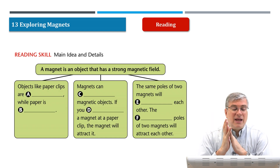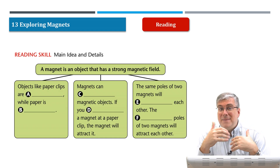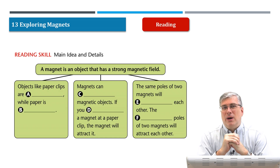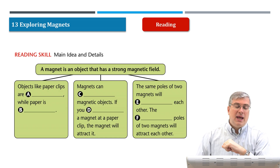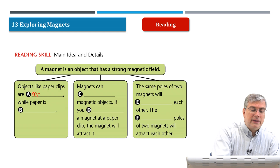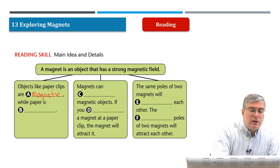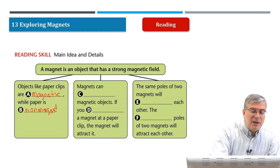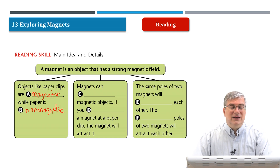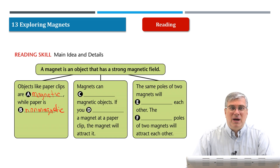The first example is that objects like paper clips are magnetic while paper is non-magnetic. We talked about these two types of things — things that are magnetic like paper clips, which are made of metal, so they are magnetic. And paper is non-magnetic. Paper doesn't have any metal, tin, iron, or other types of metal in it, so it is not magnetic. It is not affected by the forces of magnetism. It is non-magnetic.